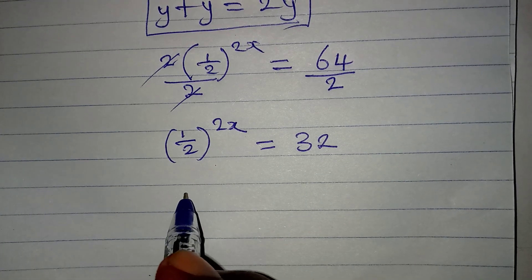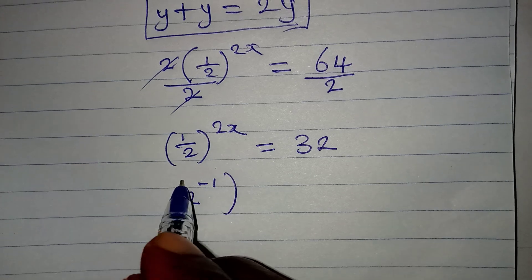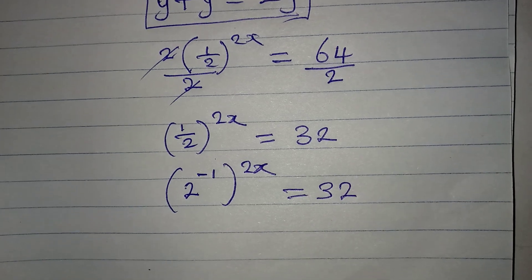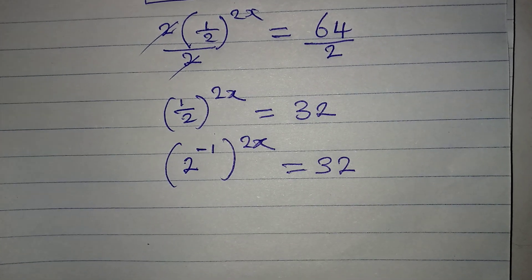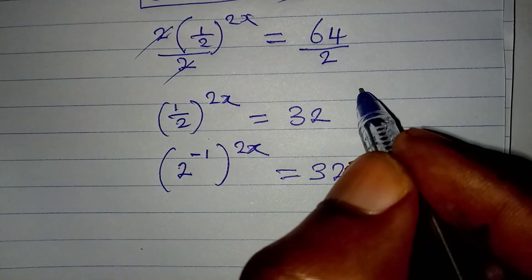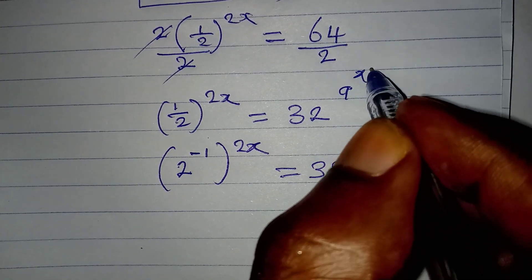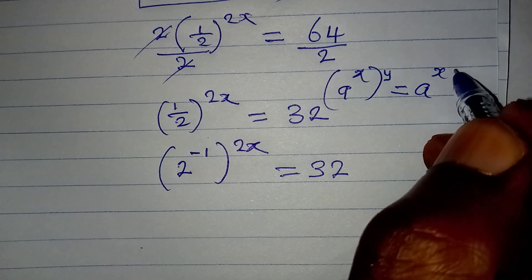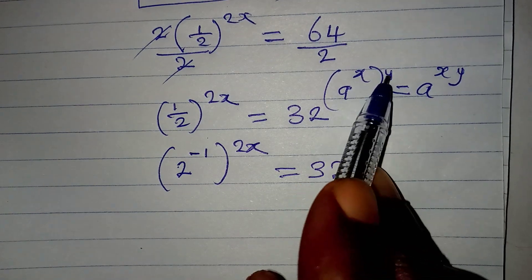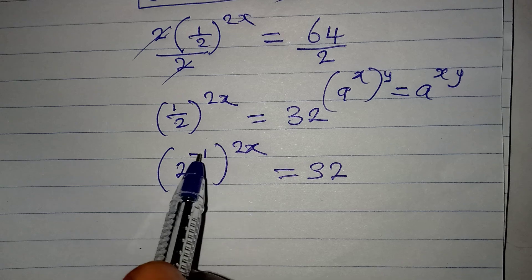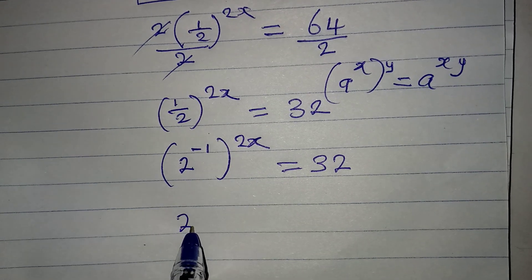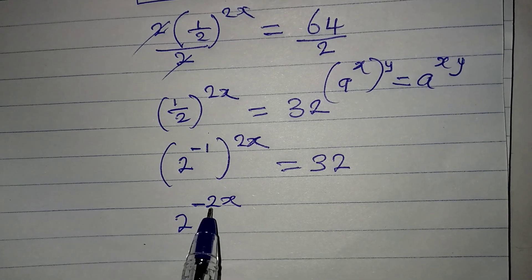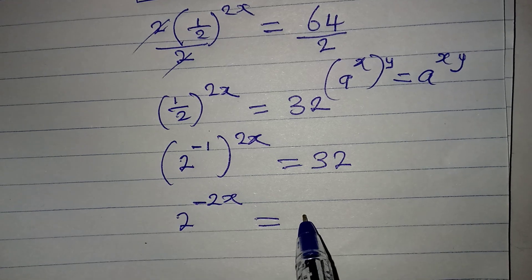Now remember that 1 over 2 to the power of 2x can be rewritten. If you have a to the power of x, then to the power of y, it equals a to the power of x times y — you just multiply the powers. So we can write this as 2 to the power of negative 2x, because negative 1 times 2x is negative 2x, and that equals 32.